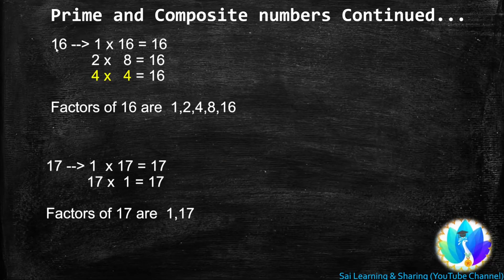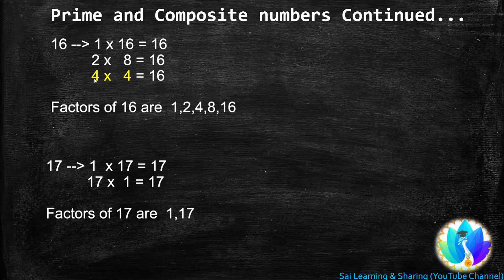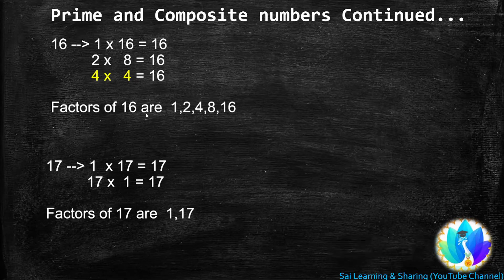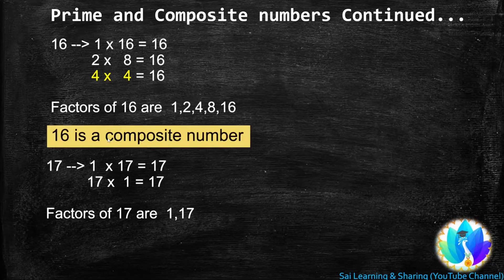Next, 16. 1 is a factor of every number, so 1 × 16 = 16. 16 is a multiple of 2: 2 × 8 = 16. 16 is not a multiple of 3, but 16 is a multiple of 4: 4 × 4 = 16. We stop here because both numbers are the same. So the factors of 16 are 1, 2, 4, 8, and 16. Since 16 has more than two factors, 16 is a composite number.